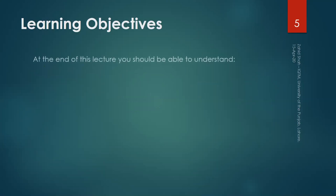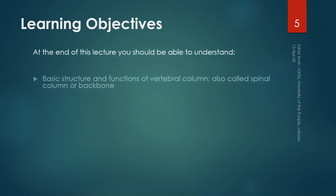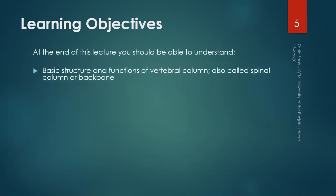The learning objectives of this lecture include understanding the basic structure and functions of the vertebral column, also called the spinal column or backbone. It is called the vertebral column because each individual bone is called a vertebra. It is called the spinal column because the spinal cord passes through a hole in each of these bones, and it is called the backbone as well.